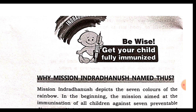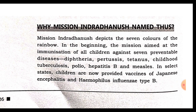Why is this mission known as Mission Indradhanush? Mission Indradhanush depicts the seven colors of the rainbow. In the beginning, the mission aimed at the immunization of all children against seven preventable diseases — just as a rainbow has seven colors. That is why it is called Indradhanush.